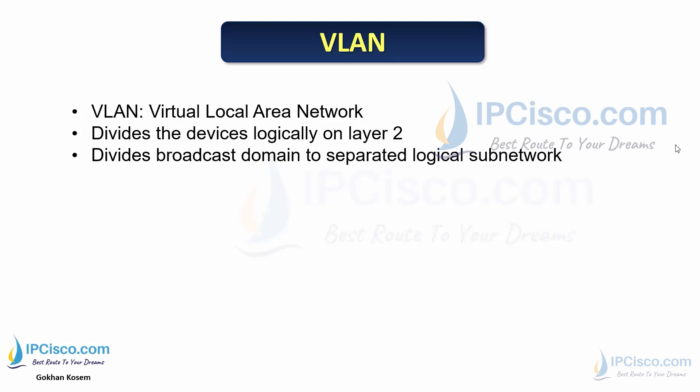Think about having a switch in our local area network — all devices are connected to this switch. When you send data from one PC to another, all devices connected to this switch can receive that data. This is one broadcast domain. With virtual LANs, we configure VLANs per interface basis, assigning VLANs to switch ports so each port belongs to a specific virtual LAN.